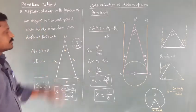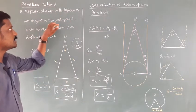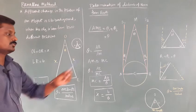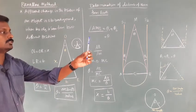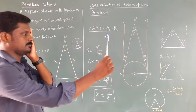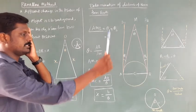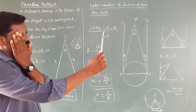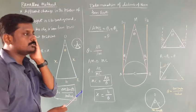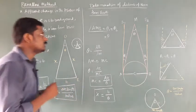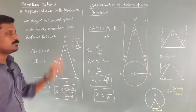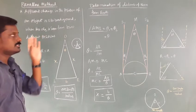So what is parallax? It is the apparent change in the position of an object with respect to the background when the object is seen from two different positions. For example, I am seeing a pen using my right eye — with respect to the background there is a tree. Now I close the right eye and see through the left eye, and there is an apparent change in position. This is the basic idea.